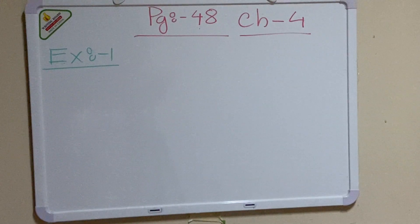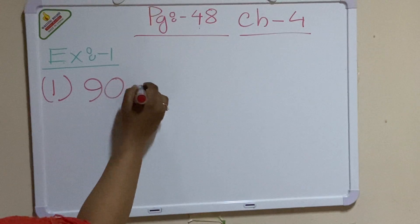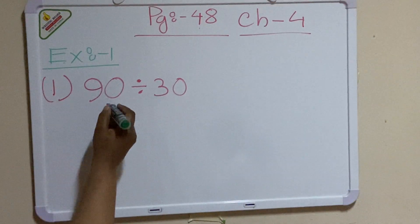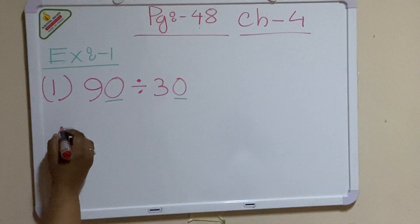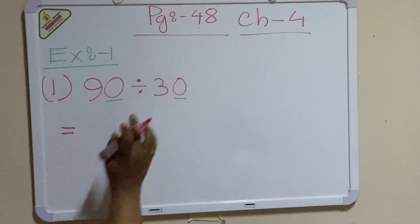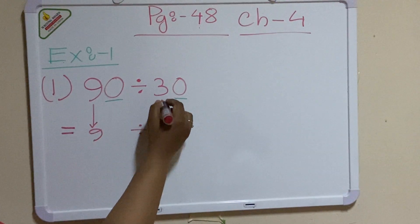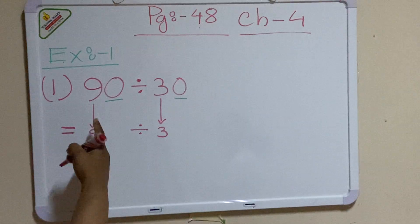In exercise number 1, I will show you number 1 which is 90 divided by 30. Here you can see in the dividend there is one zero and in the divisor there is another zero. You can reduce the same number of zeros from both the dividend and divisor. That means you can remove one zero from the dividend and one zero from the divisor, leaving 9 and 3.